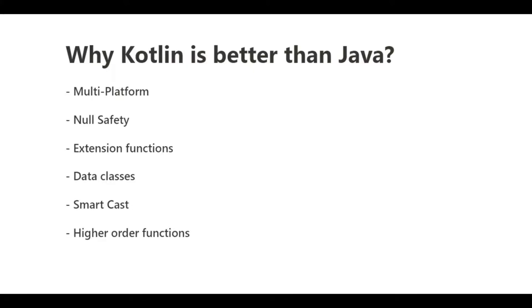So why is Kotlin better than Java? Kotlin is a multi-platform language. It is used for Android development, and it also has interoperability with JavaScript for web development. It has a null safety feature which makes it safe against null pointer exceptions. It also has extension functions, smart cast, data classes, higher order functions, when statements, coroutines, and many more extra features that were not present in Java.